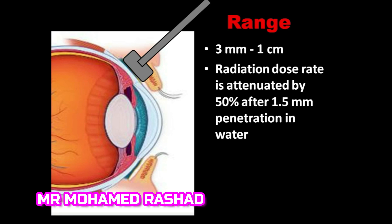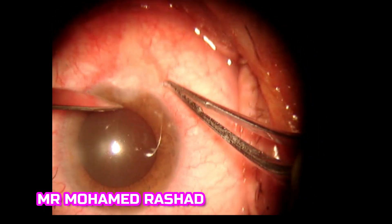The range of the radiation is from three millimeters to one centimeter in water, which is equivalent to any tissue in the body. The radiation has a certain limit and is attenuated by 50 percent after penetration of 1.5 millimeters in water.